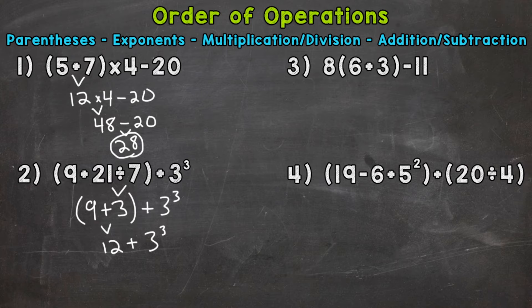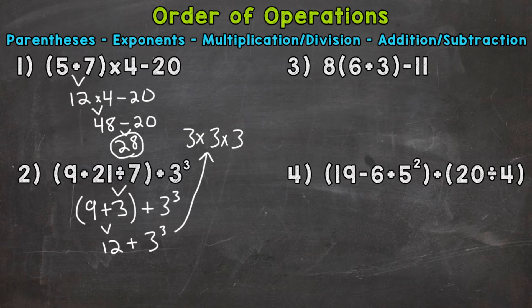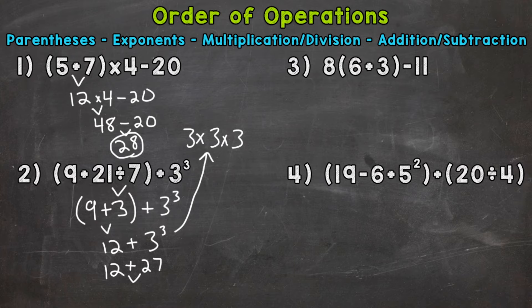Any exponents? Yes. So 3 to the power of 3, or 3 cubed — that does not mean 3 times 3. It means 3 times 3 times 3. So 3 times 3 is 9, times 3 gives us 27. So 3 cubed equals 27. Bring down everything we did not use: the 12 and the addition sign. We end with 12 plus 27, which is 39. So our final answer for number 2 is 39.